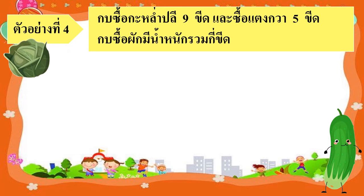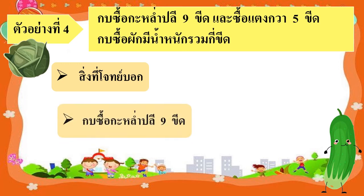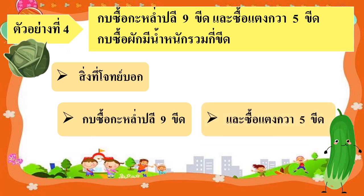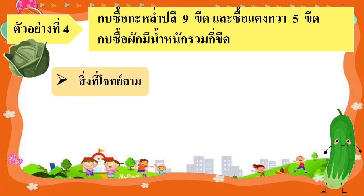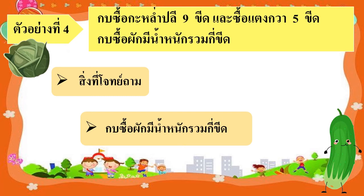ตัวอย่างที่ 4 กบซื้อกะหล่ำปี 9 ขีด และซื้อแตงกวา 5 ขีด กบซื้อผักมีน้ำหนักรวมกี่ขีด ก่อนอื่นนะคะ คุณน้องจะพาเด็กๆไปวิเคราะห์โจทย์ปัญหากันก่อน สิ่งที่โจทย์บอกคือ กบซื้อกะหล่ำปี 9 ขีด และซื้อแตงกวา 5 ขีด สิ่งที่โจทย์ถามคือ กบซื้อผักมีน้ำหนักรวมกี่ขีด